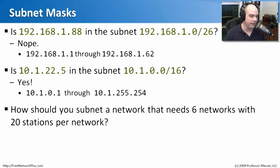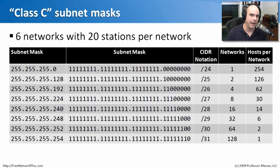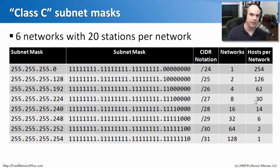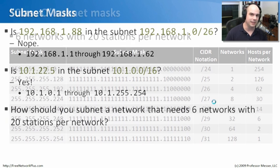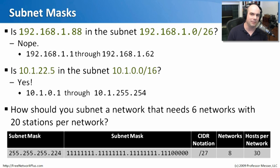How should you subnet a network that needs six networks and at least 20 stations per network? Going back to the chart: four networks isn't enough, so the next option is eight networks. A subnet mask of slash 27 — that's 255.255.255.224 — allows up to eight networks with 30 hosts per network. That meets our requirement of six networks and at least 20 devices each, with a couple of spare networks if needed. So the subnet mask we'd use is 255.255.255.224, or slash 27 in CIDR block notation.